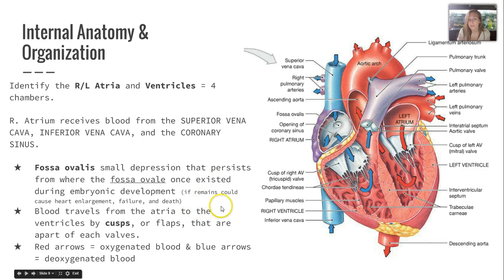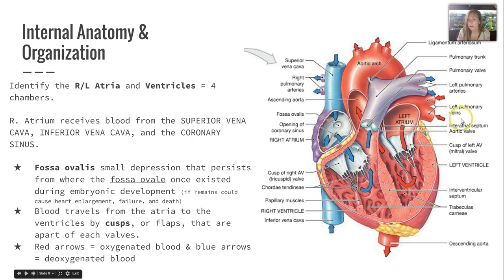Blood travels from the atria to the ventricles through cusps — also known as flaps — which are part of each valve. Red arrows indicate oxygenated blood and blue arrows indicate deoxygenated blood. The pulmonary veins are marked with a red arrow because blood reaching from the lungs carries oxygen.